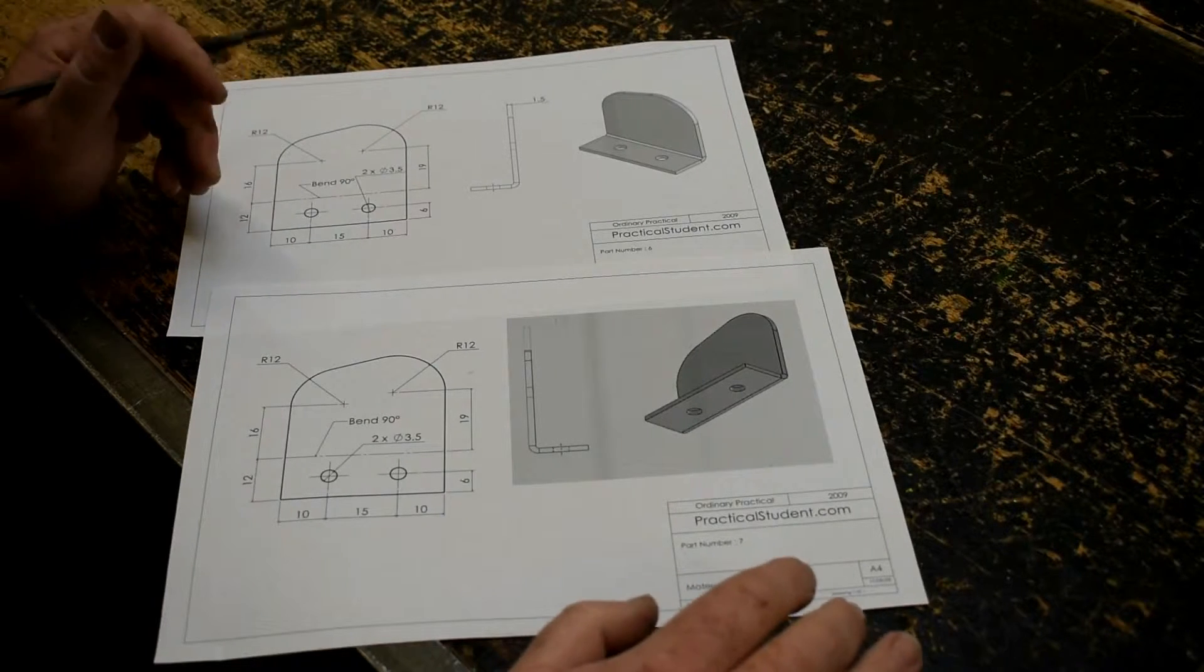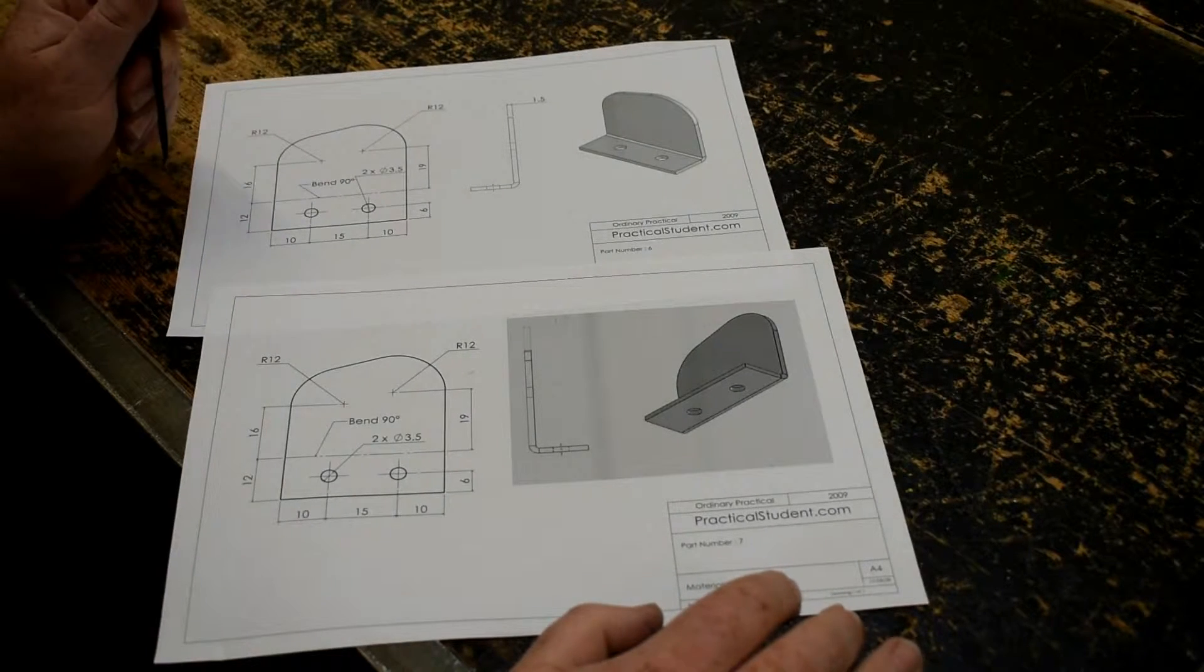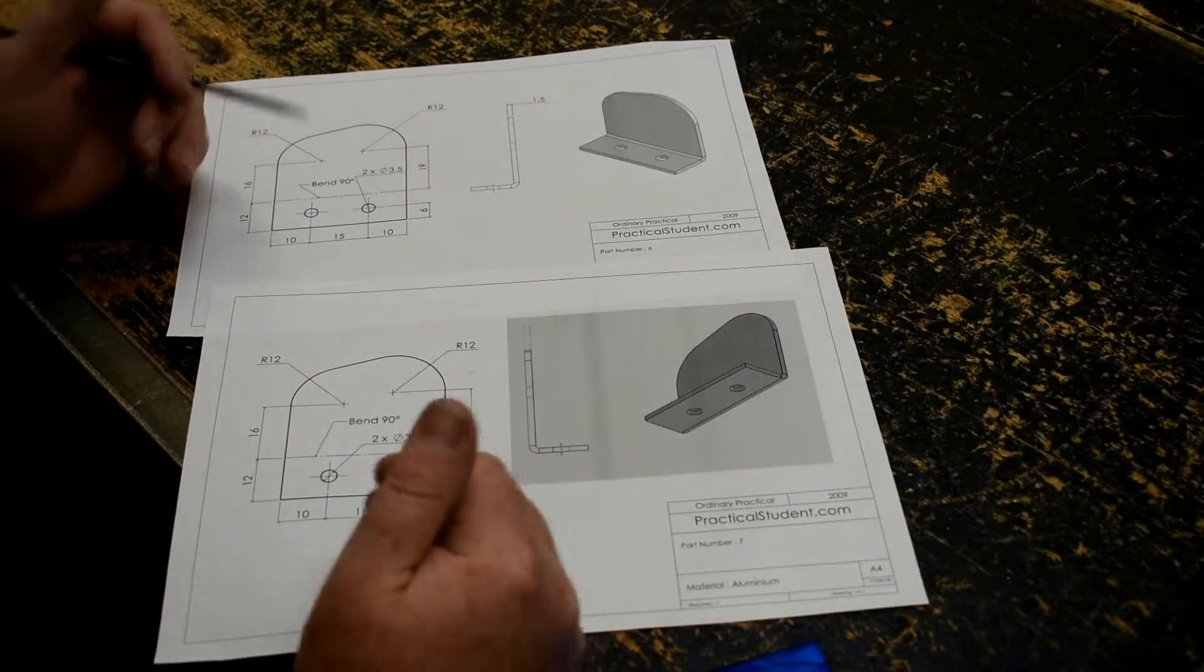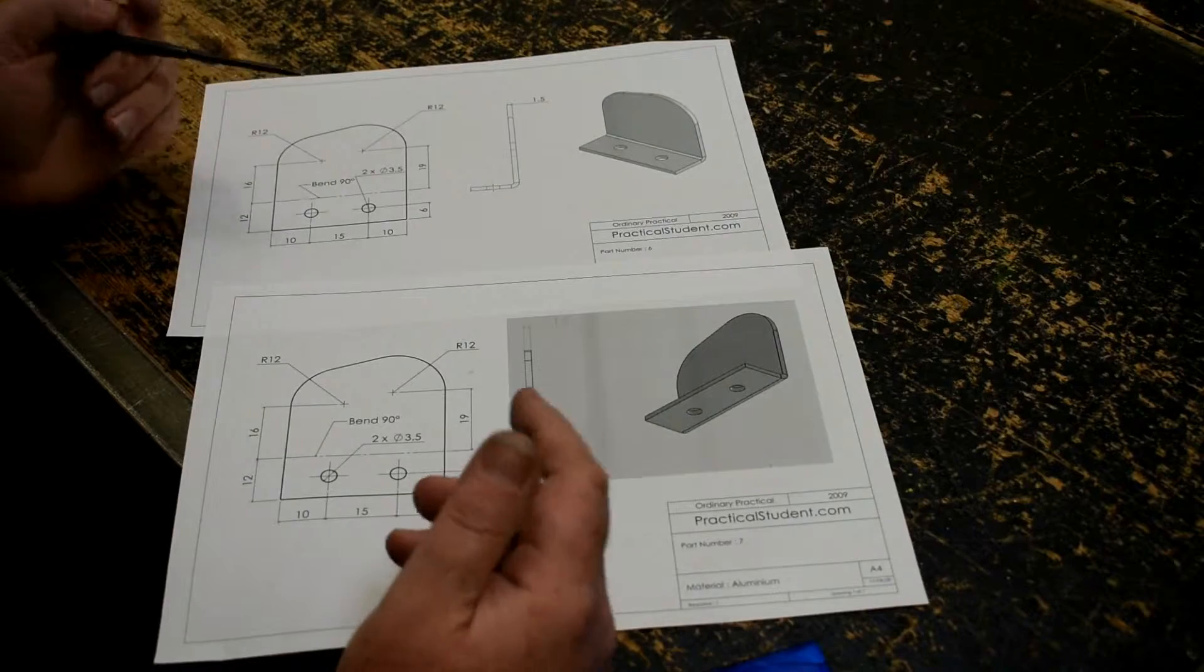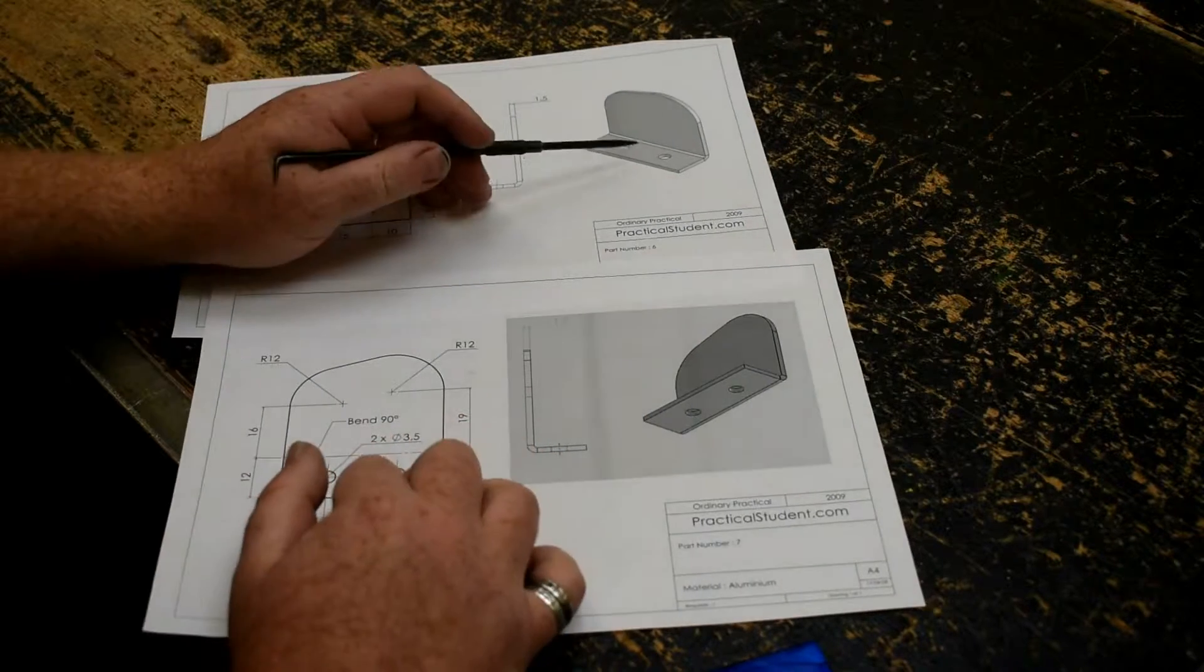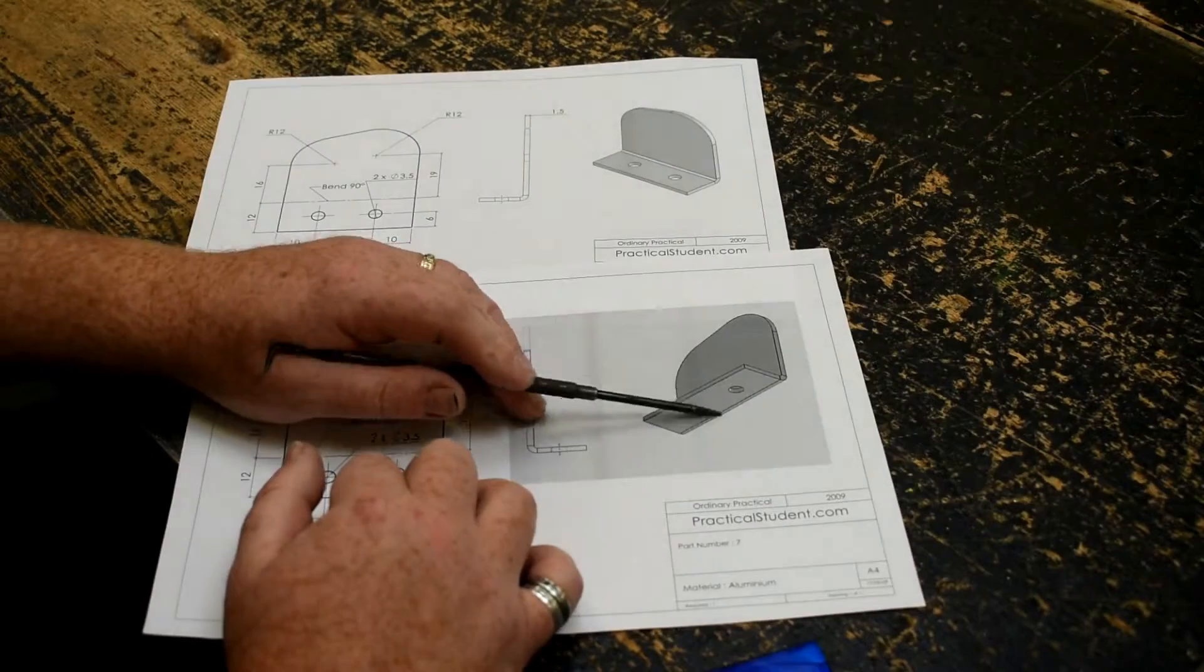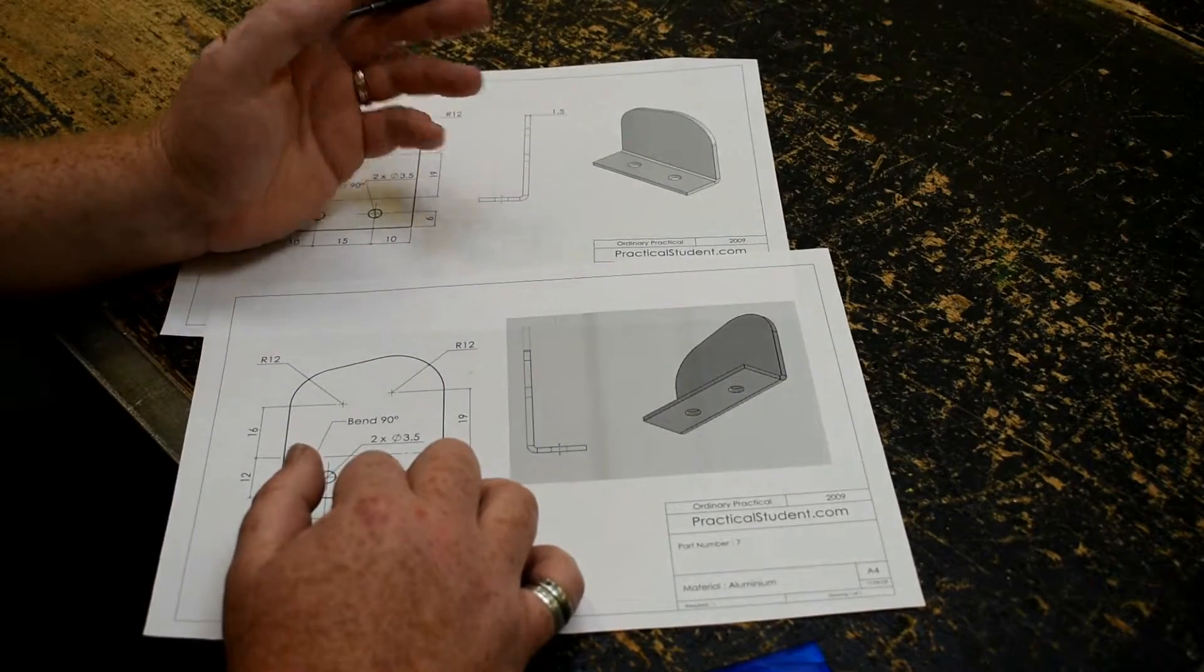This is the marking out of part 6 and 7 for the airplane project. Part 6 and 7 are marked out the exact same way, drilled the same way, and cut and filed the same way. The only difference between the two parts is that the section at the end is bent in the opposite direction.